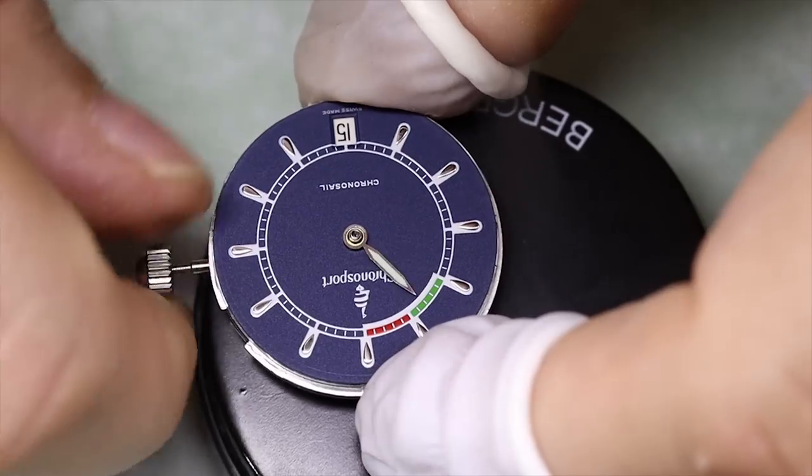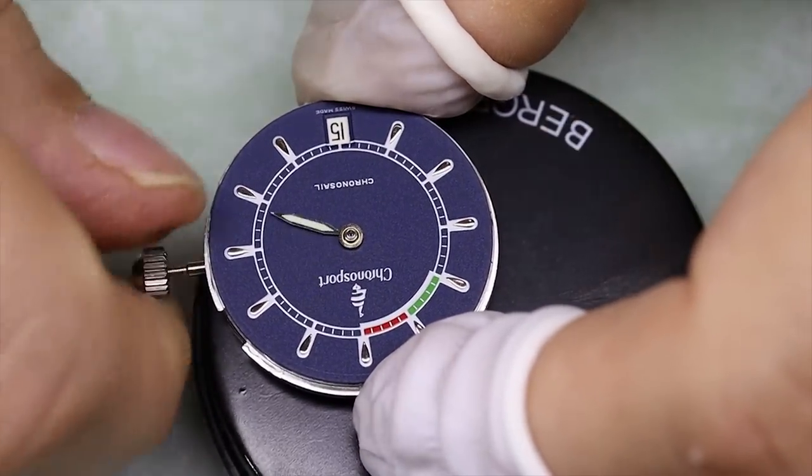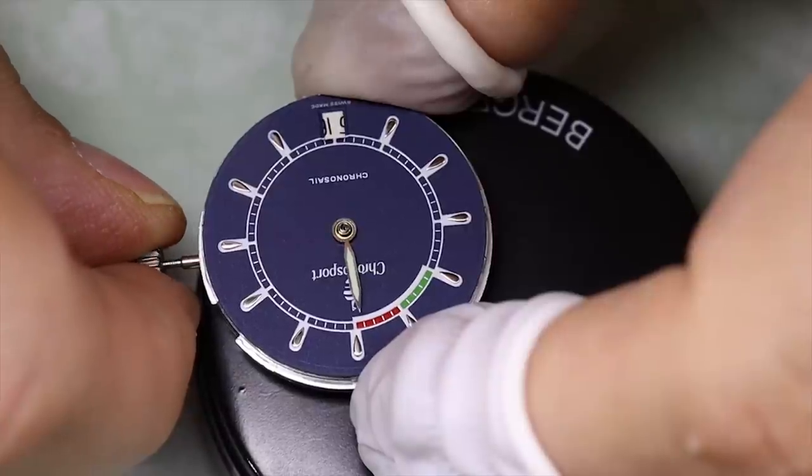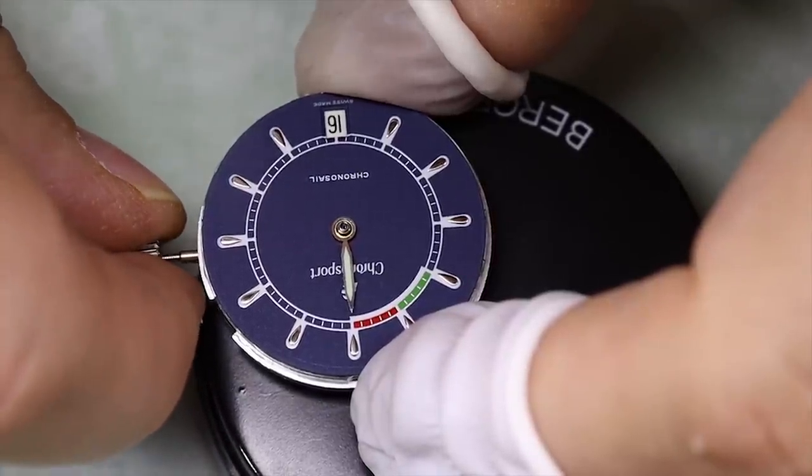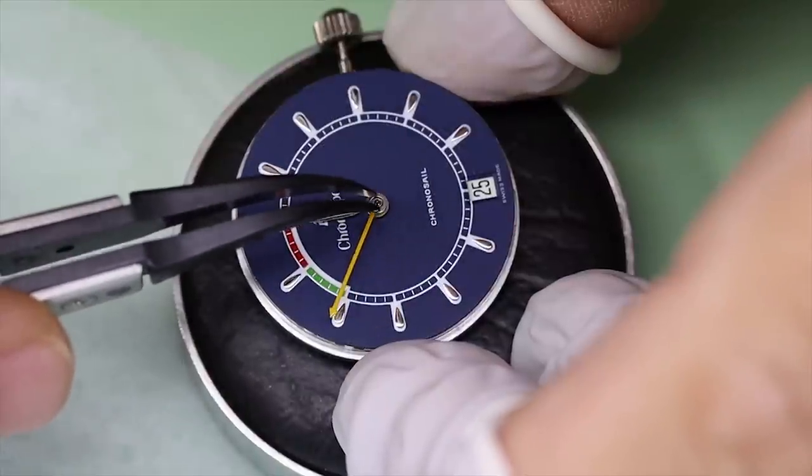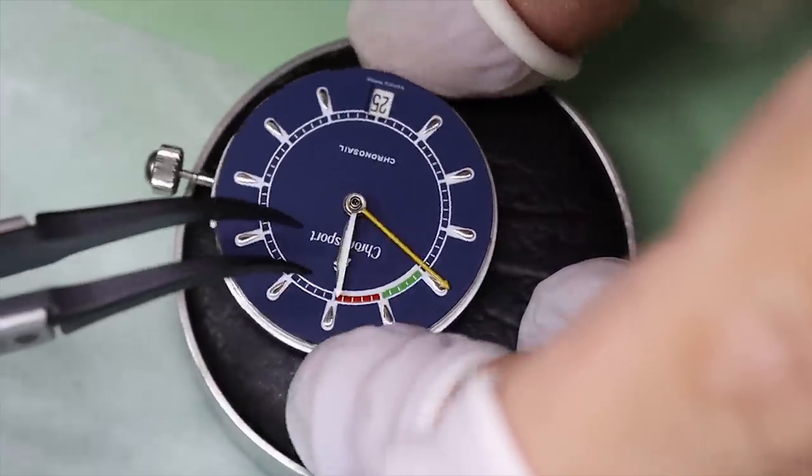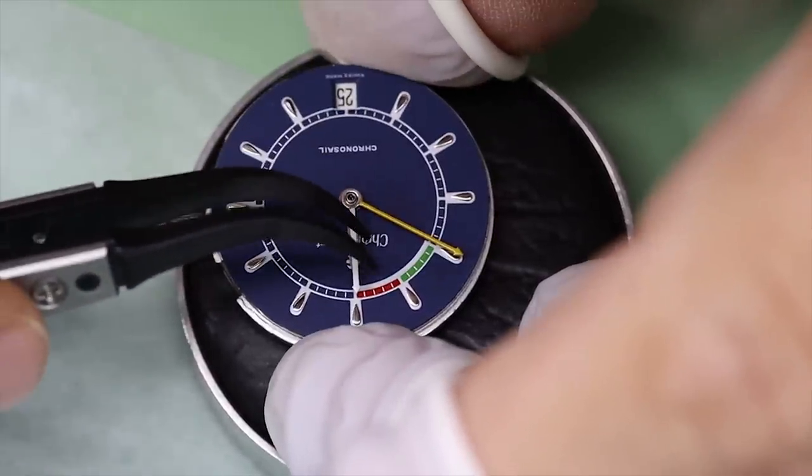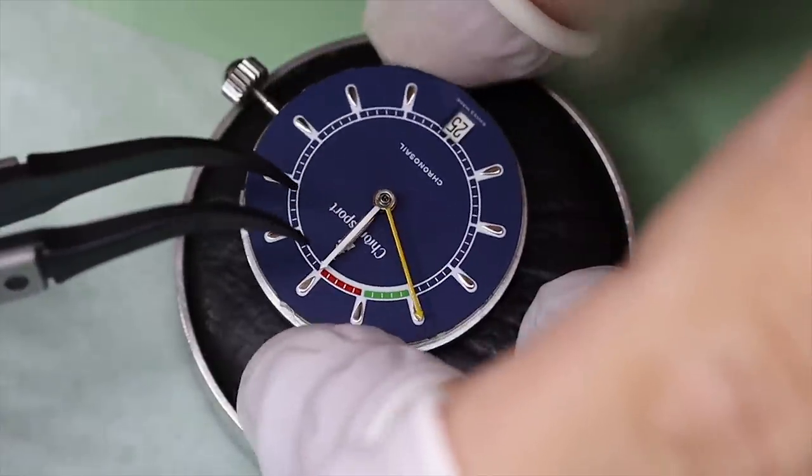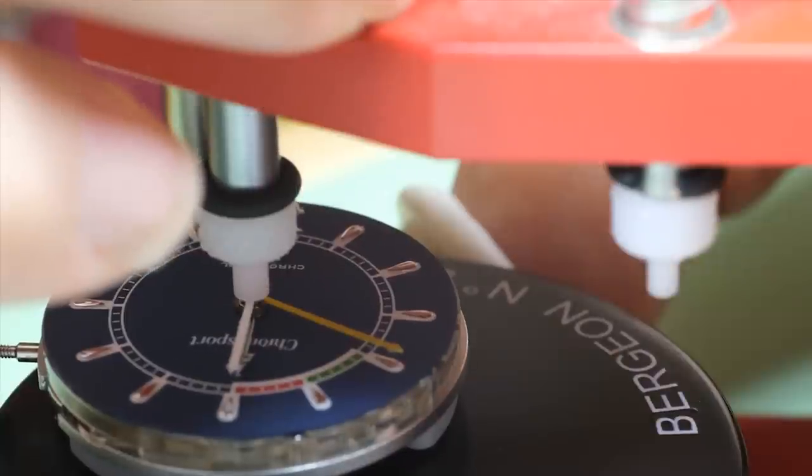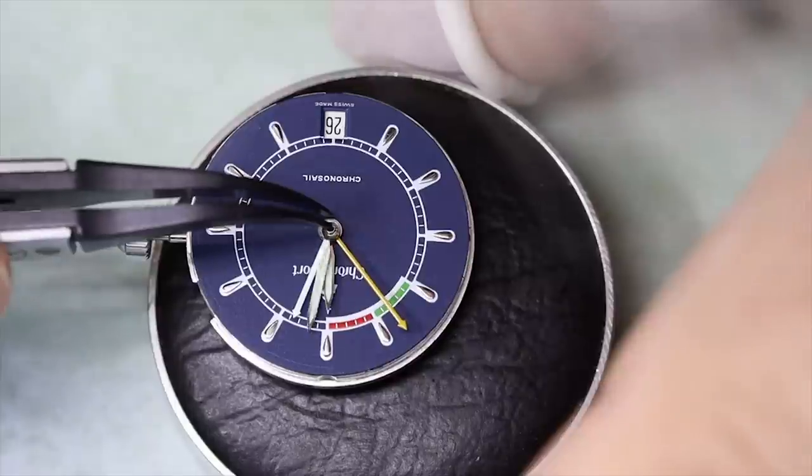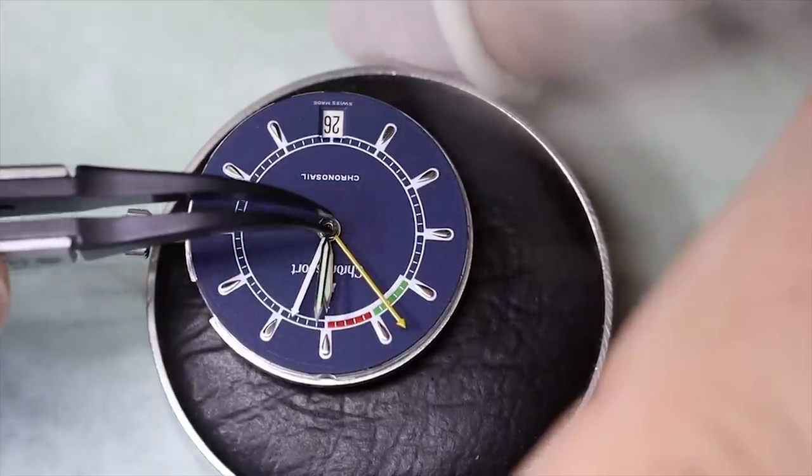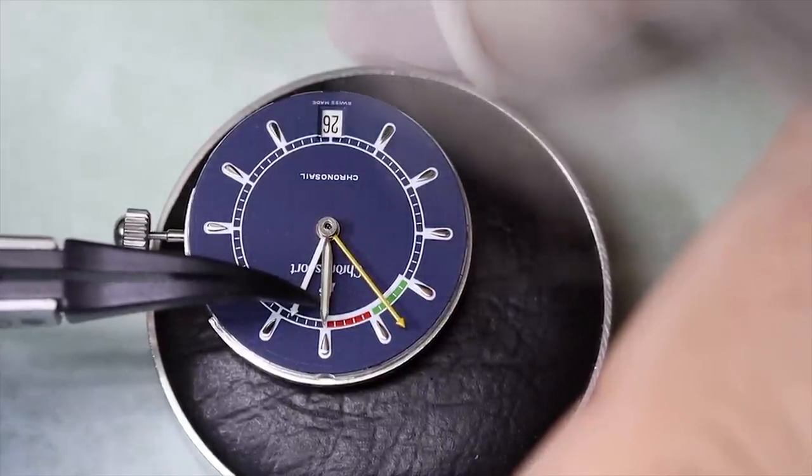We're getting ready to place all the hands. It's the standard routine so far - we turn the crown until the date changes and we know that should be midnight, so then we put the hour hand at midnight. Then what is different is that the next hand we put on is not the minute hand, it's the chronograph double minute hand. And we want the yellow hand to be at the start of the regatta timer and then the white hand will be at zero. And then we can put the minute hand on top of that.